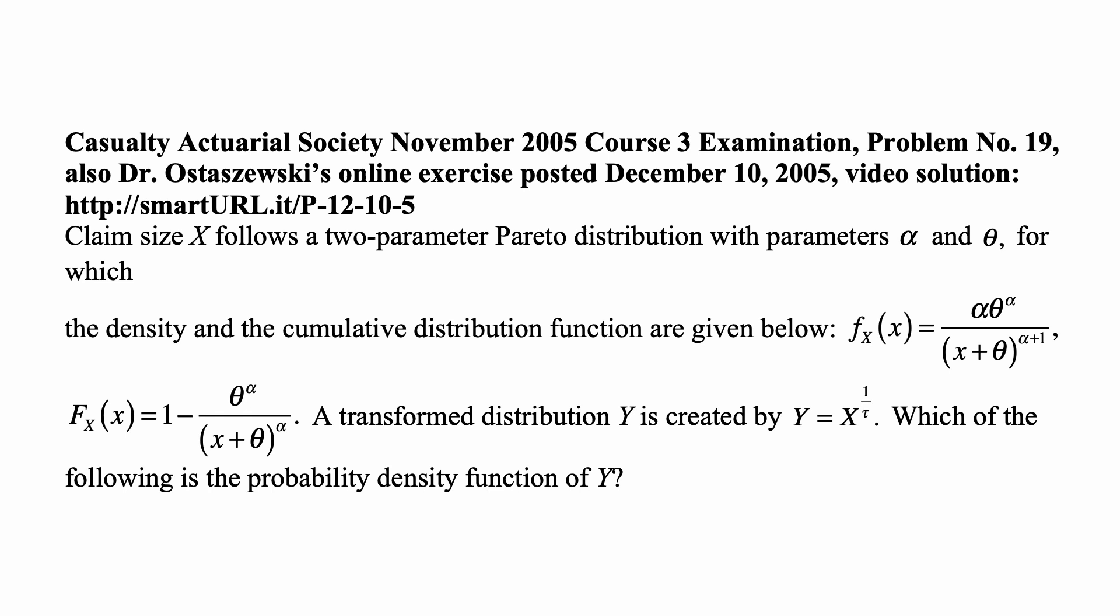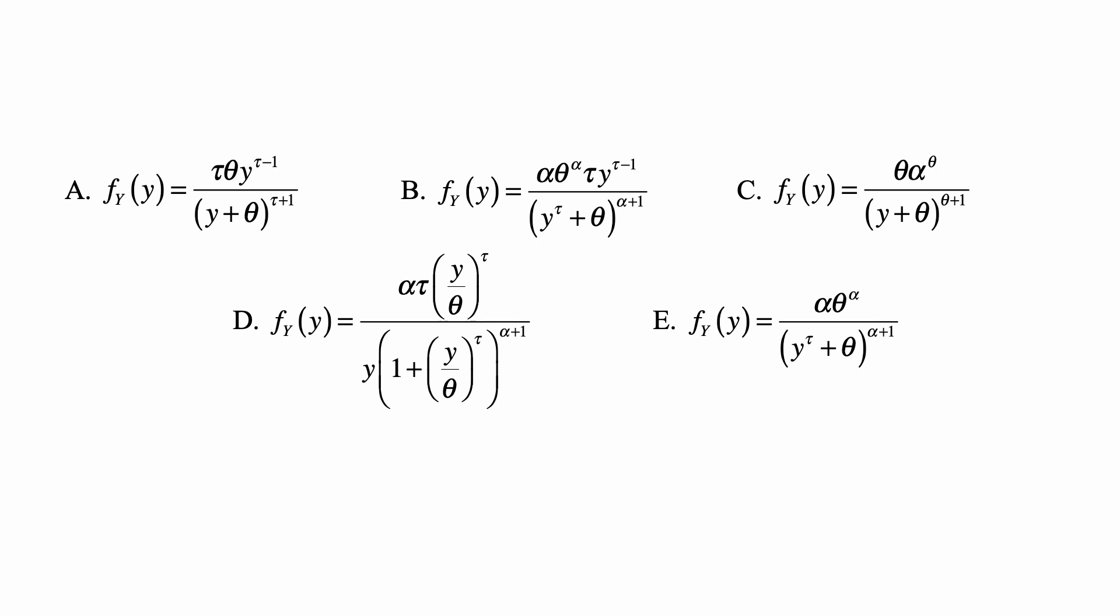A transformed distribution Y is created by Y = X^(1/τ). Which of the following is the probability density function of Y? And here are the five choices for that density.